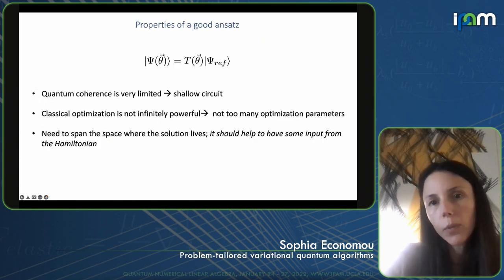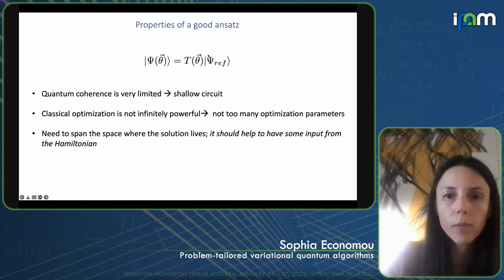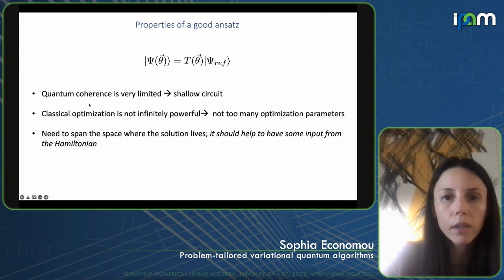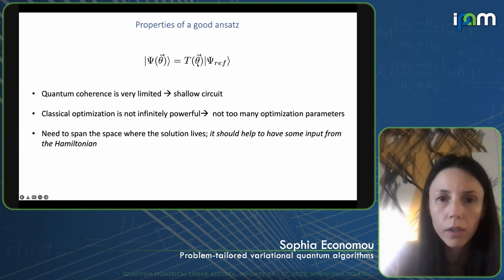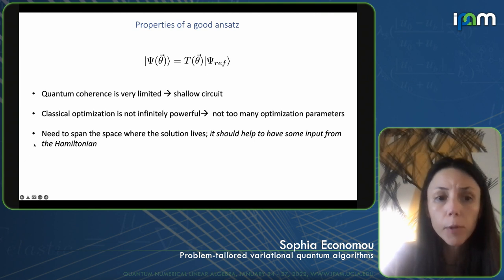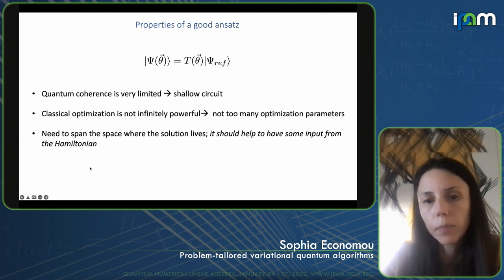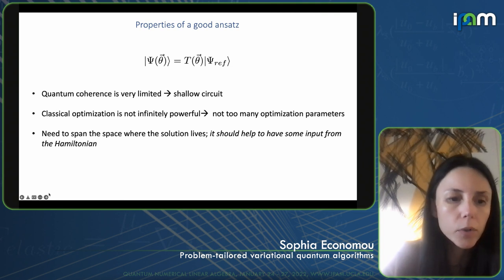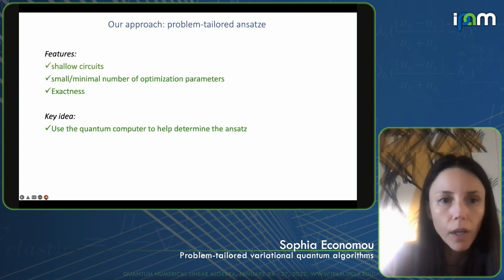These are the properties we would like from a good ansatz. We have some reference state and apply a parametrized unitary operator. We want the ansatz to not require too-deep circuits — since coherence is very limited — and not too many optimization parameters since optimization isn't infinitely powerful. And we would like to span the space where the solution lives, because if we're searching in one corner of the Hilbert space and the solution lives in a totally different corner, we won't find that solution.